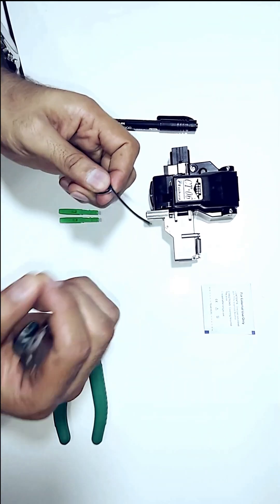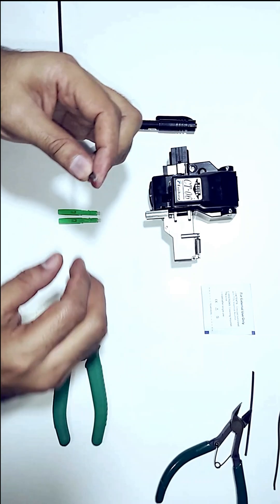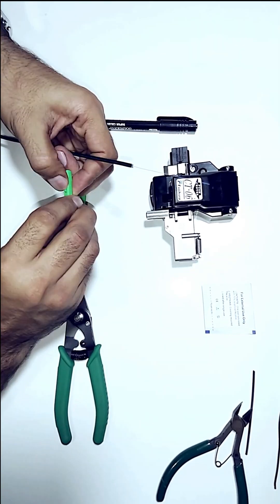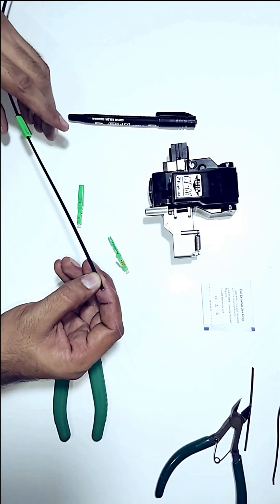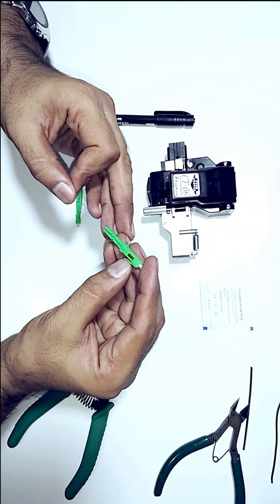Let's gather the necessary tools and begin the termination process. One of the most common issues people face during fast connector termination is when the fiber either breaks or becomes too long during stripping. In this video, I'll show you how to overcome this problem.